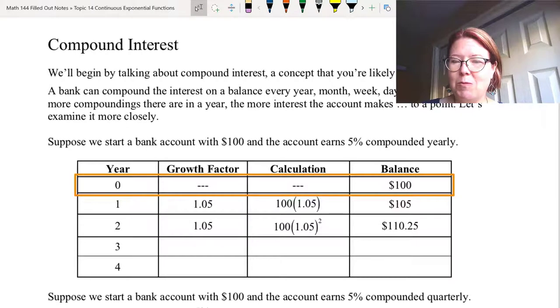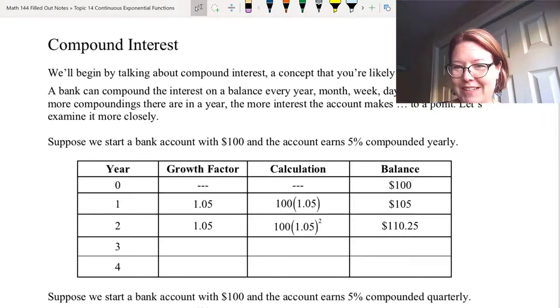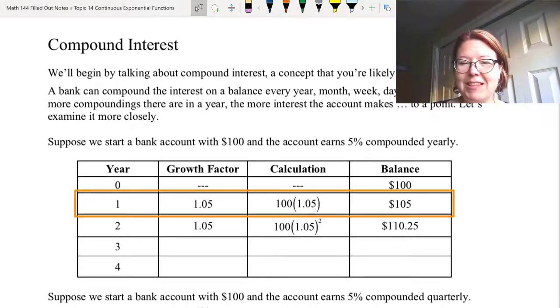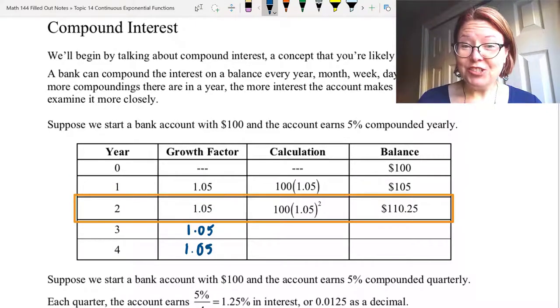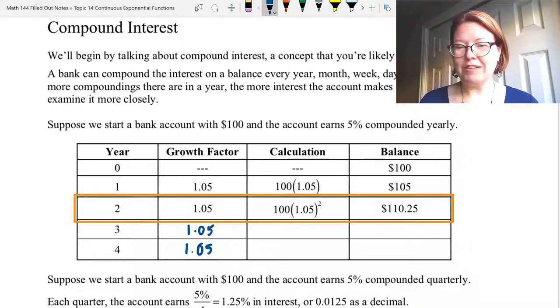So in year zero, the balance is $100. The account is earning 5% and it's compounded annually, which means our growth factor is 1.05. So when we go to calculate the balance in year one, we want to multiply 100 by 1.05 to get $105. In year two, we do the calculation for the balance as $100 times 1.05 times 1.05 or $100 times 1.05 to the second power. This gives us a balance of $110.25.